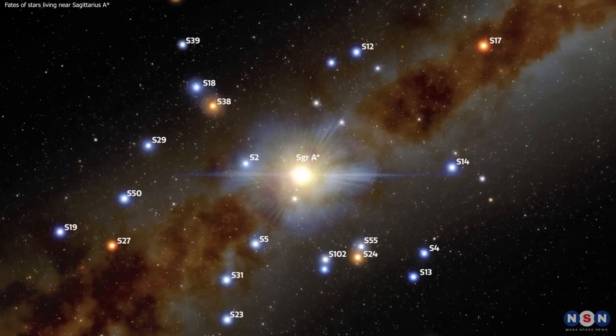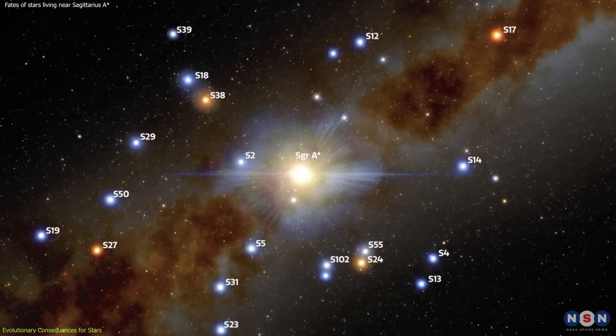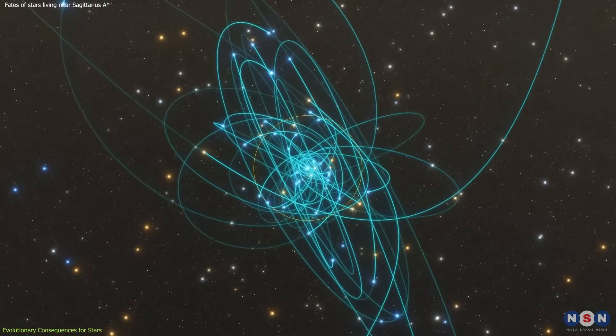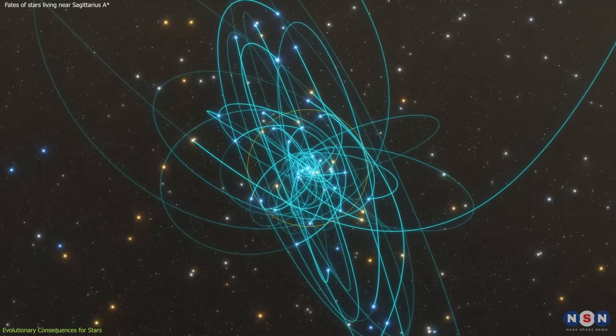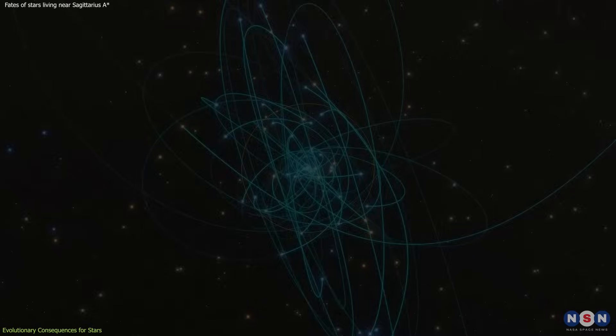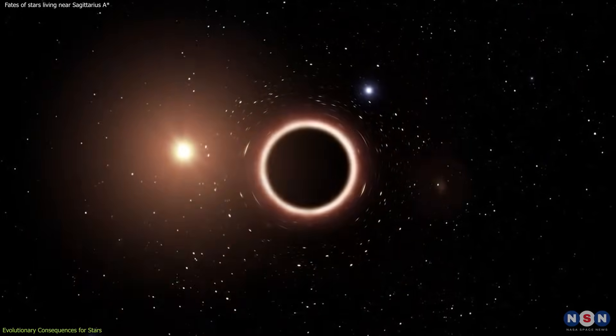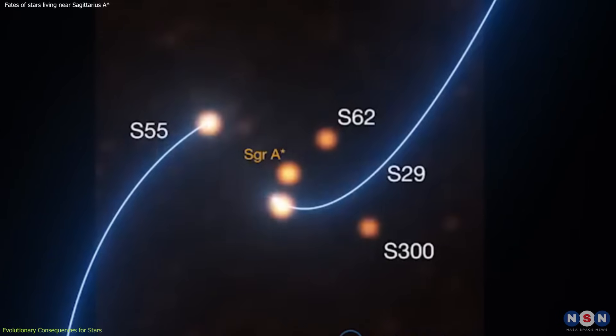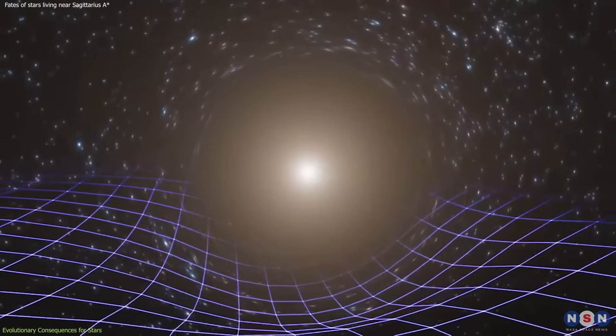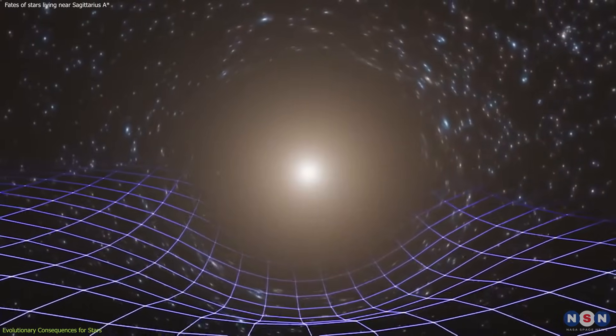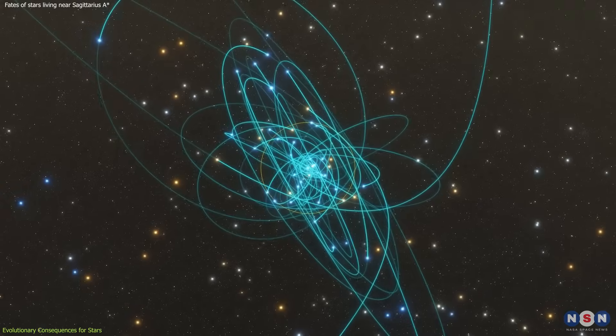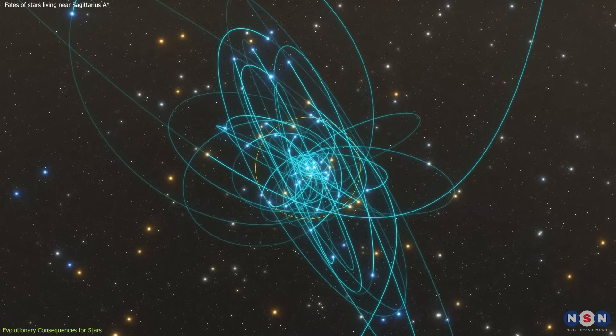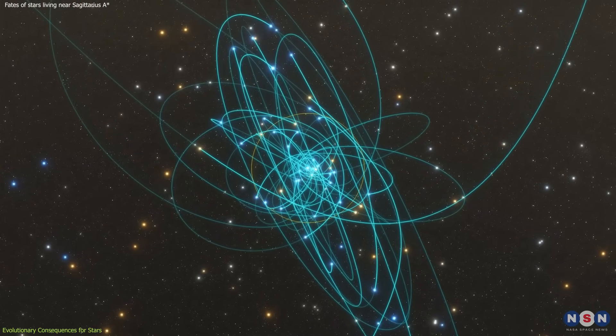This environment is characterized by punctuated chaos, a term that aptly describes the unpredictable and highly dynamic nature of stellar orbits in the vicinity of the black hole. The motion of stars near the black hole is only predictable for a few hundred years, making long-term predictions about their positions and velocities virtually impossible. This chaotic behavior has several implications for the evolution of stars in the galactic center.